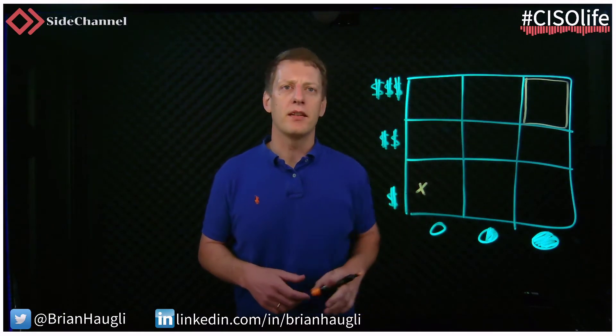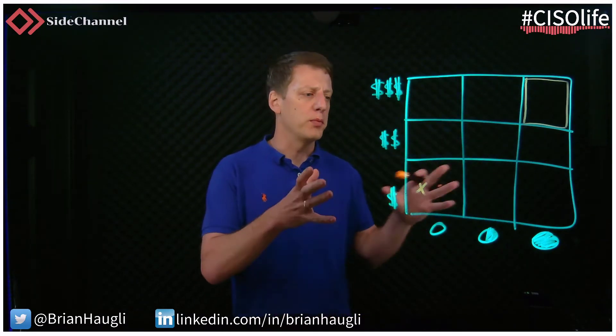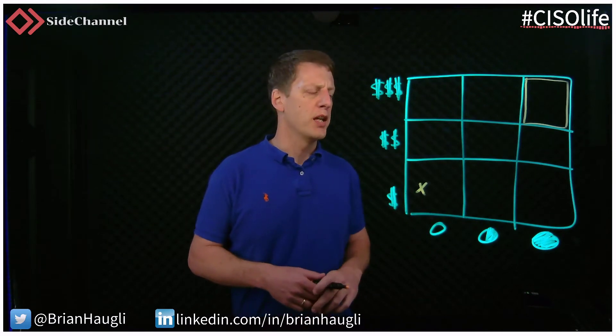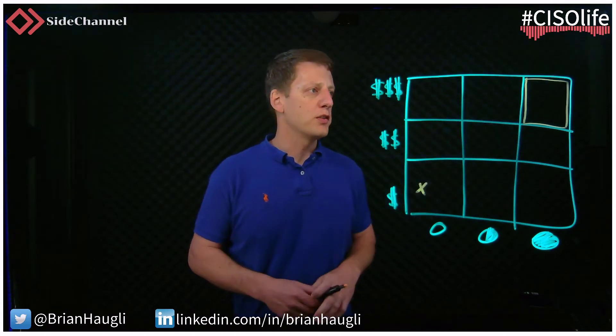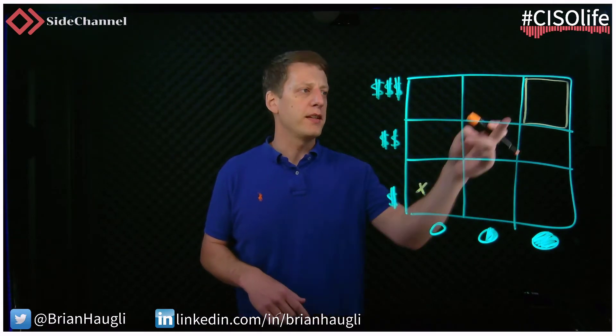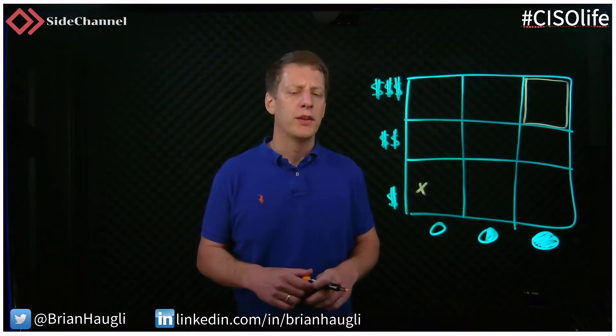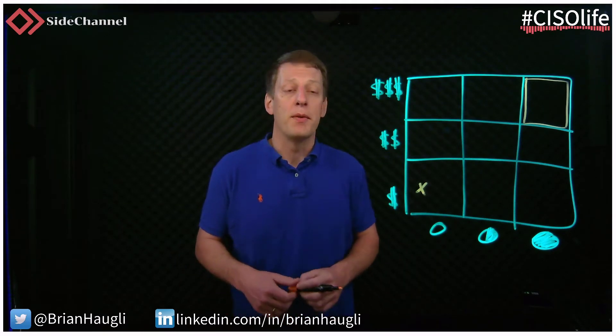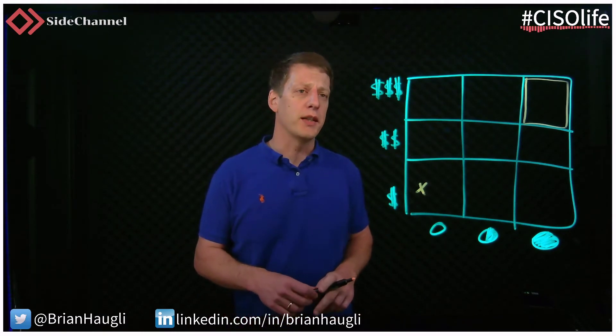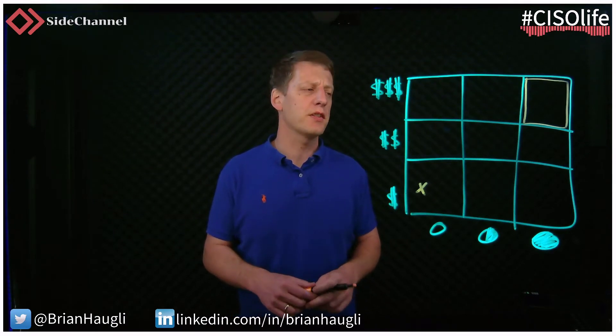Instead of treating everyone as if they exist in the very important upper-right block — those with high value and high access — let's start plotting them based on two variables. You can make this three-dimensional as well. There are a lot of vendors out there that want you to stay in the upper right-hand corner because they sell based on licensing, forcing you to purchase licenses and assess all of your vendors and M&A targets equally. I don't know if that's right, and it sure isn't cost-effective.